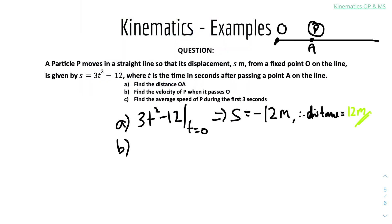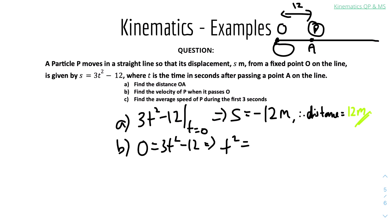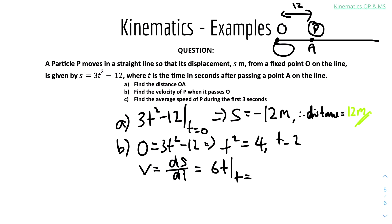Example 1b: Find the velocity of P when it passes O. At point O the displacement is 0, so set 0 = 3T² − 12, giving T² = 4 and therefore T = 2 seconds. Differentiating the displacement to get velocity: ds/dt = 6T. At T = 2, the velocity is 6 × 2 = 12 metres per second.